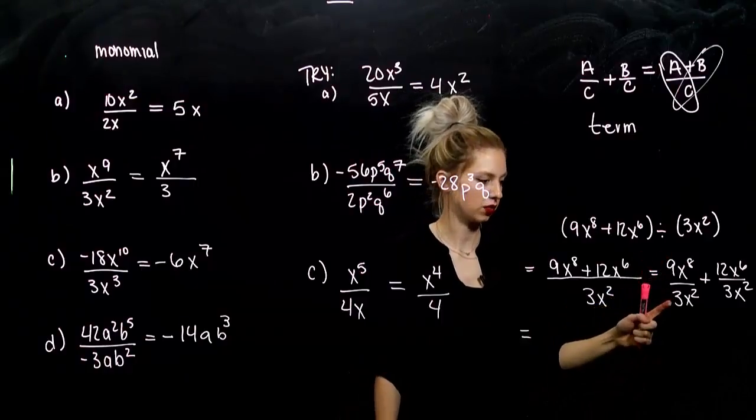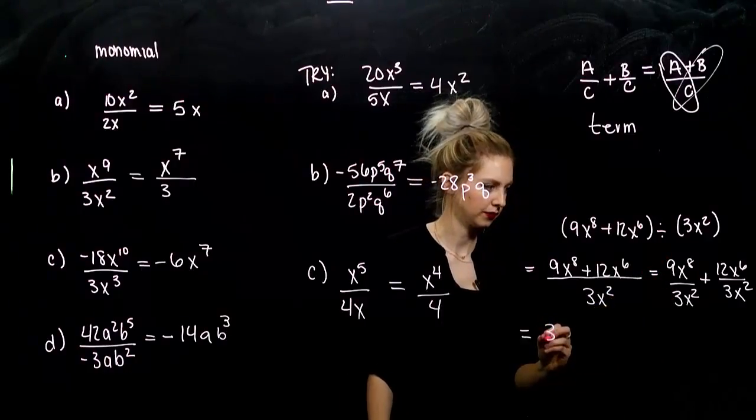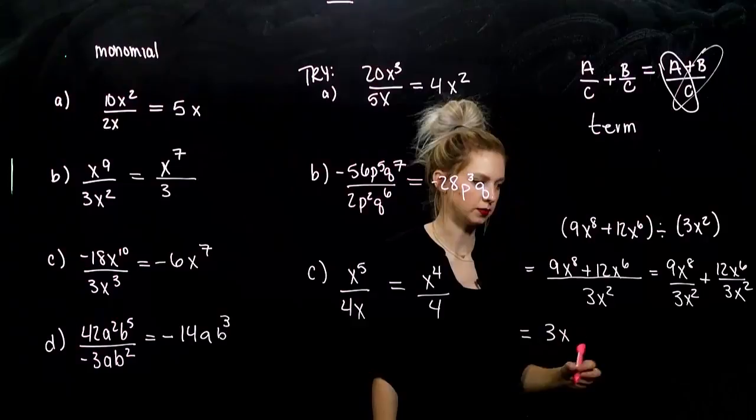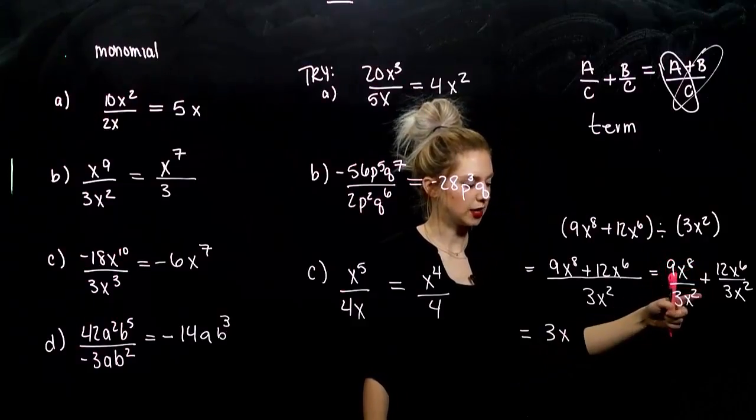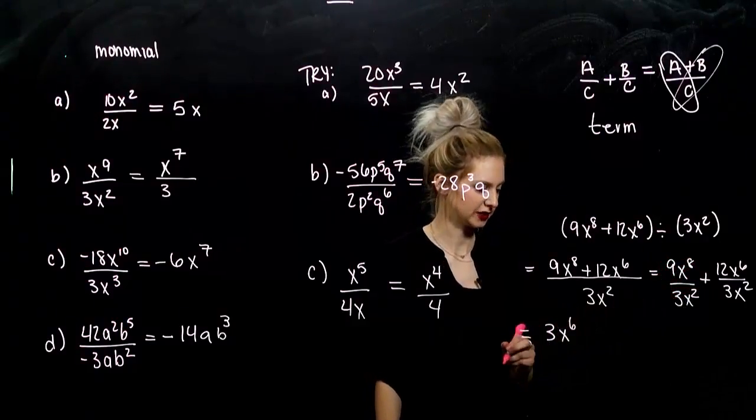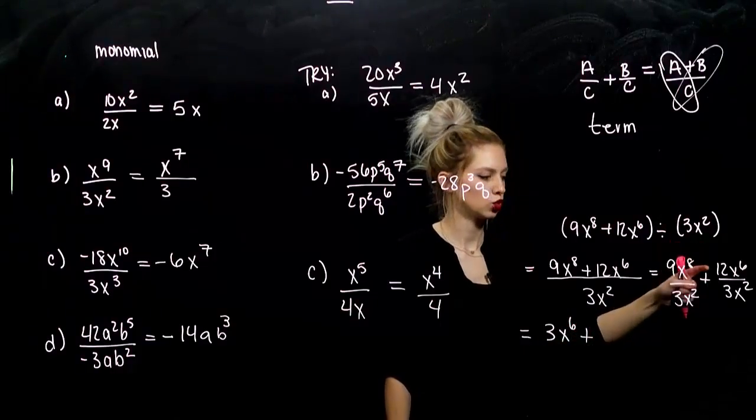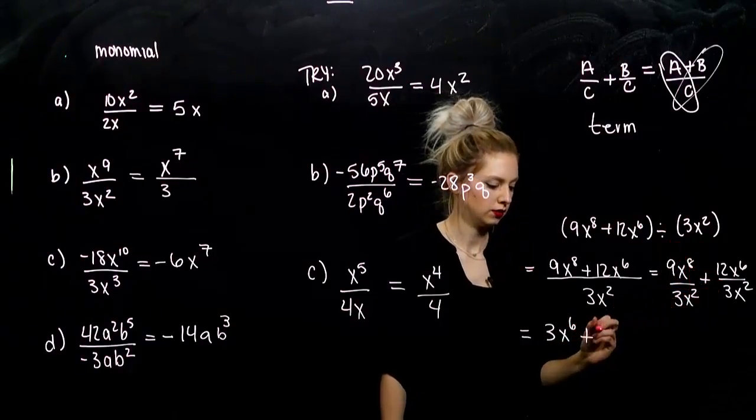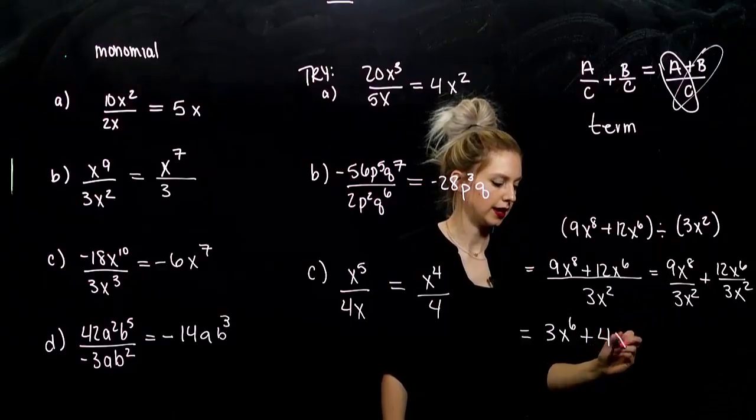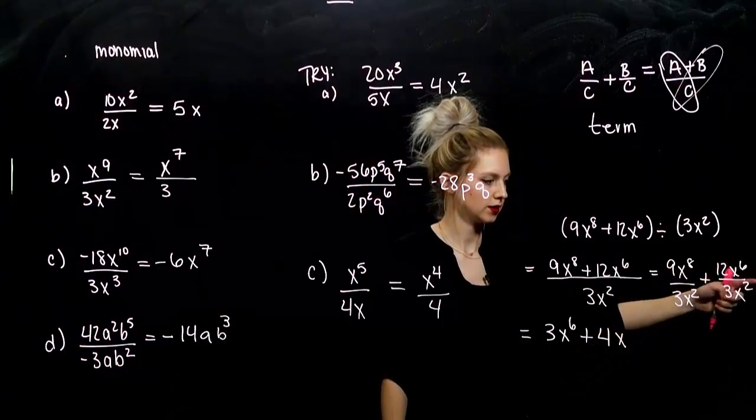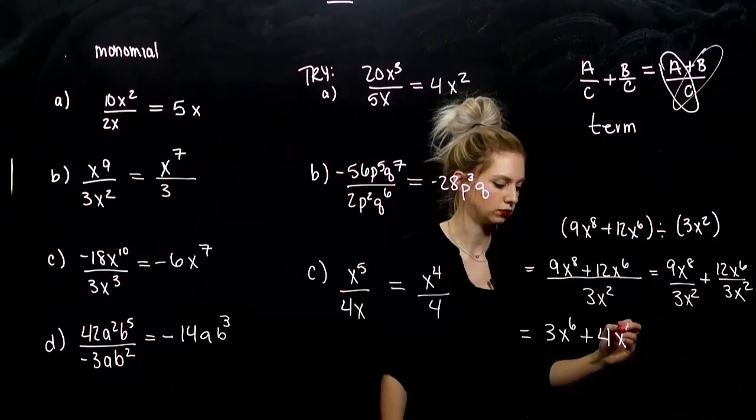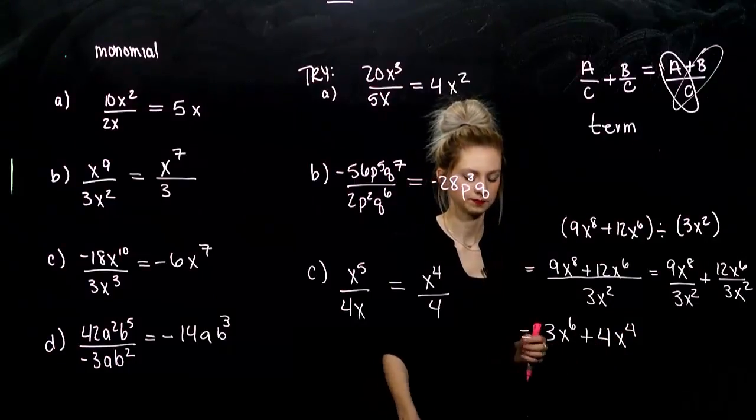Now we can simplify like we've been doing with monomial divided by monomial. So, 9 divided by 3. I've got 3. How many x's are left up top? I've got 8 and then taken away 2. 6 all together. And what are we adding on to that? 12 divided by 3 is 4. And I've got 6x up top, 2 down below. 4 left over.